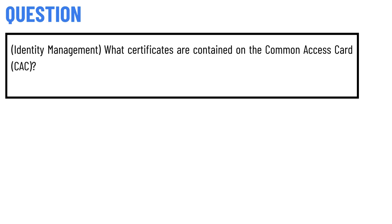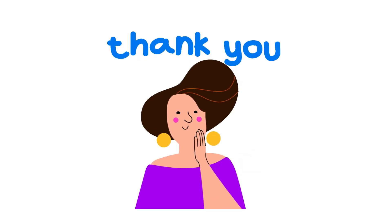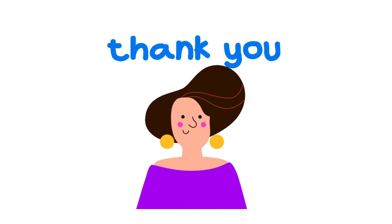Today's question is about identity management: what certificates are contained on the Common Access Card (CAC)? The correct answer is: identification, authentication, and digital signature. That's the correct answer to the question.